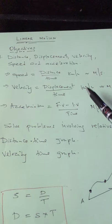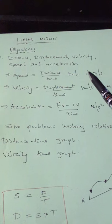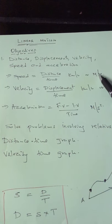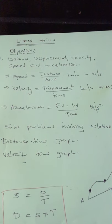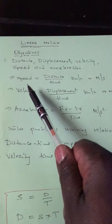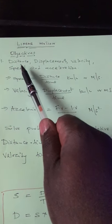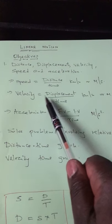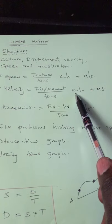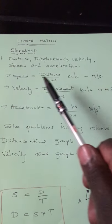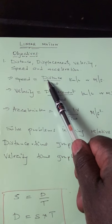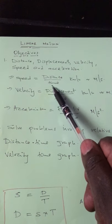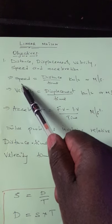To change meters per second into kilometers per hour, you multiply the value by 3,600 over 1,000. Velocity — there is not much difference between velocity and speed; the units are the same. But you only talk about velocity where displacement is involved. Velocity equals displacement per unit time. So the difference is: for speed it's distance over time, but for velocity it's displacement over time. When it's velocity, displacement is involved; when it's speed, distance is involved.